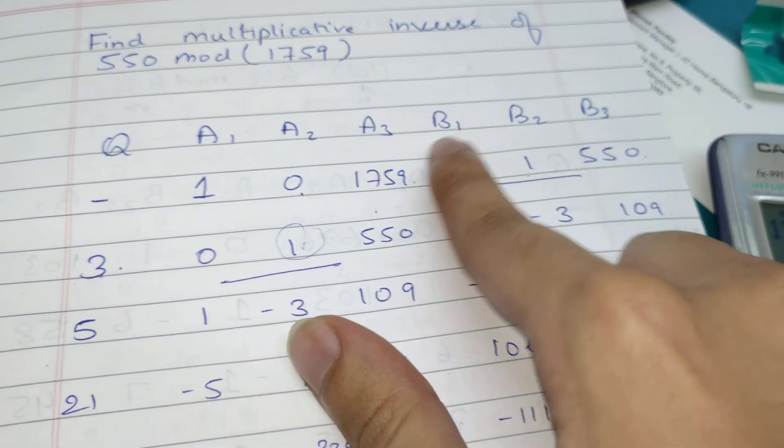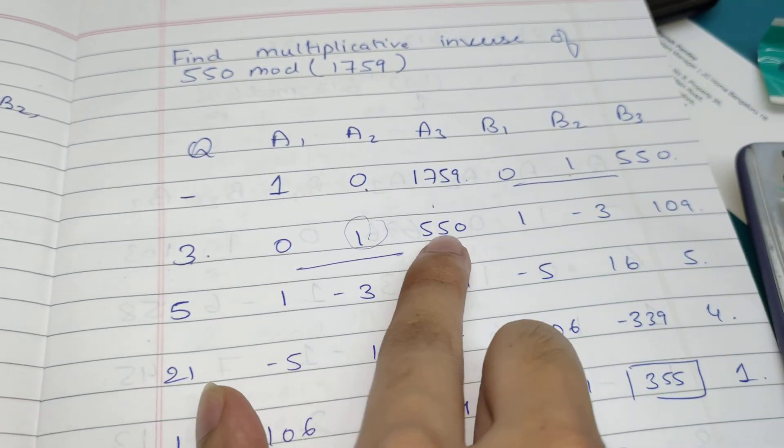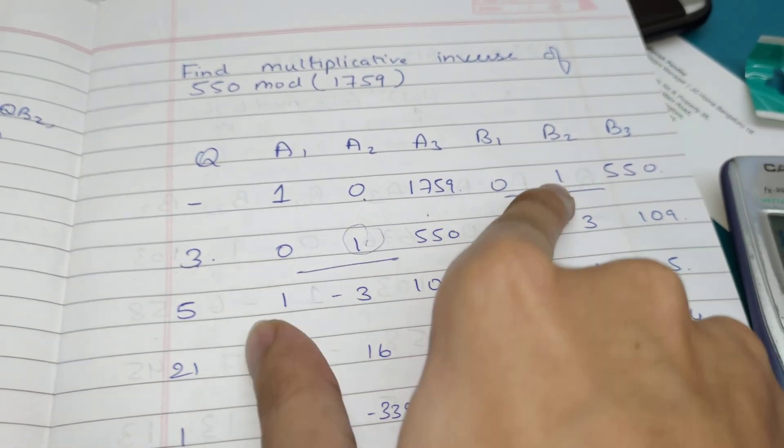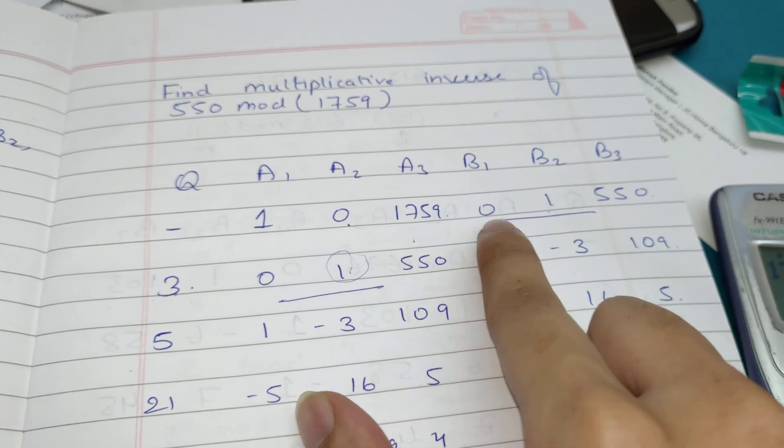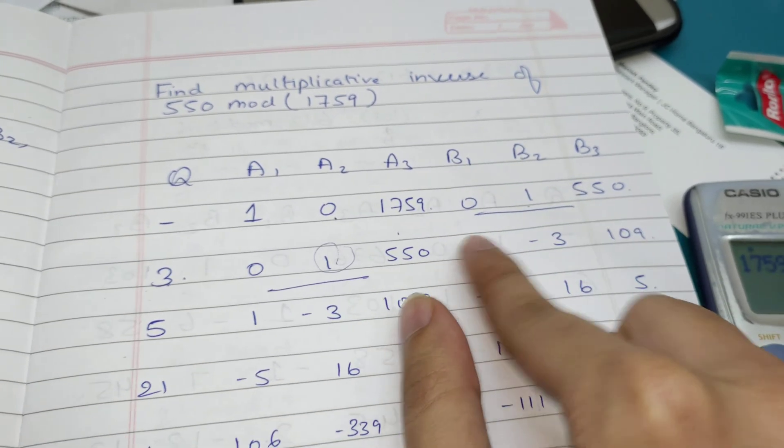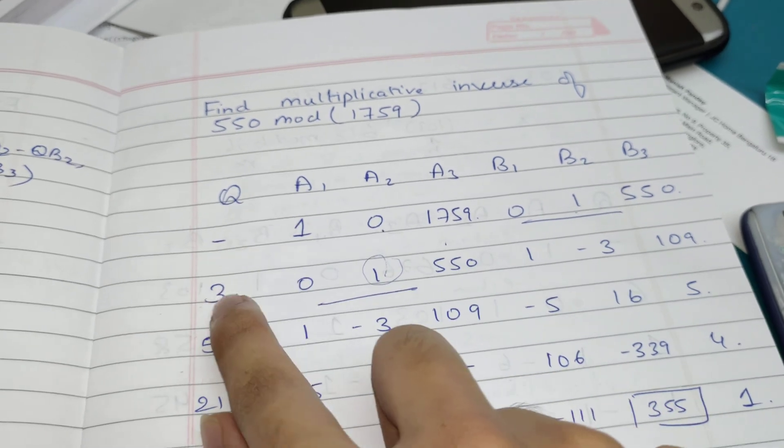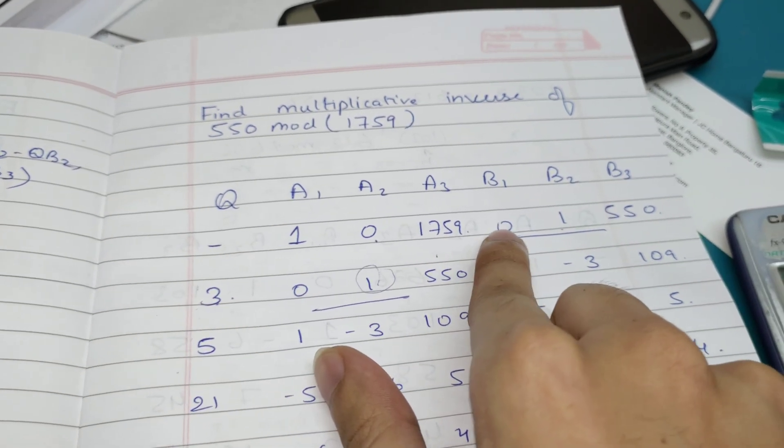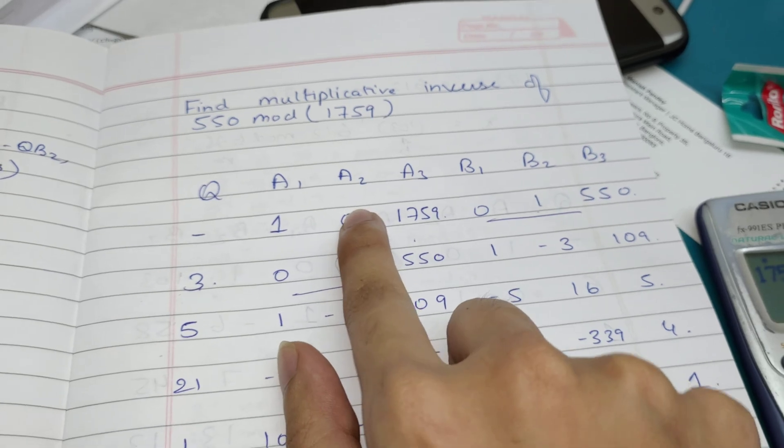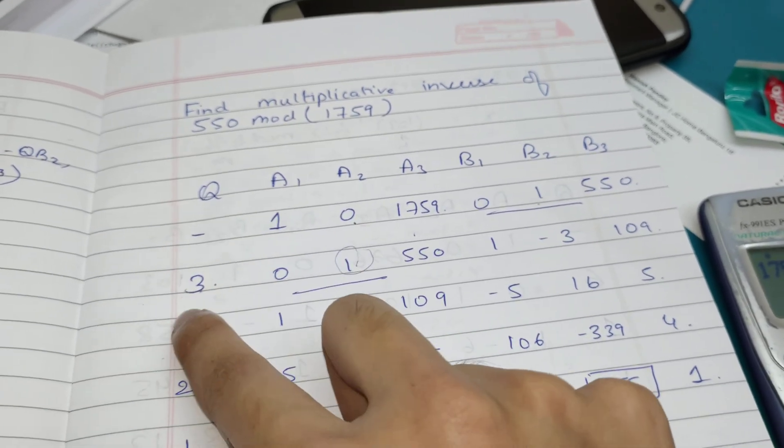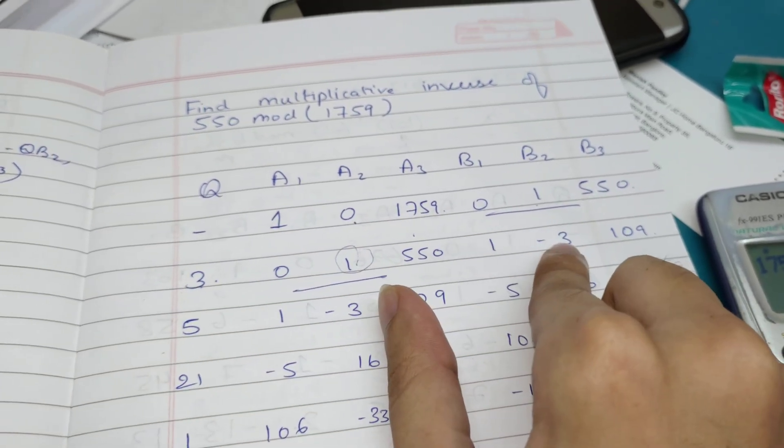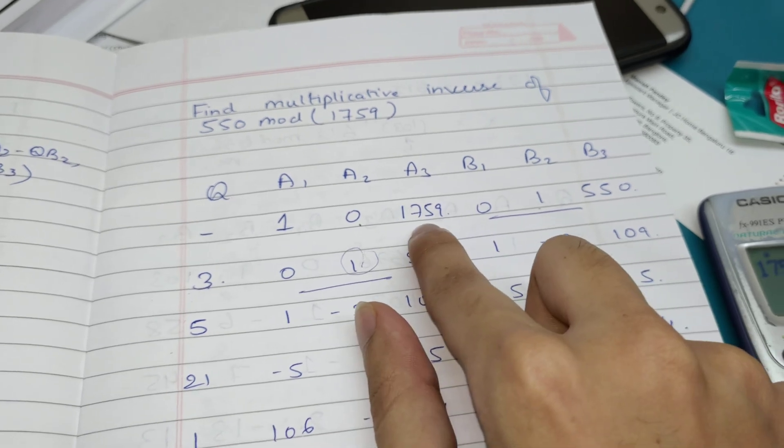The main process starts here. How do we get this? What we have to do is: 1 minus 3 into 0, that is 1. Next is 0 minus 3 into 1 equals -3. Then 1759 minus 3 into 550 equals 109.